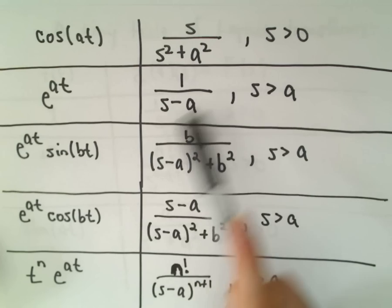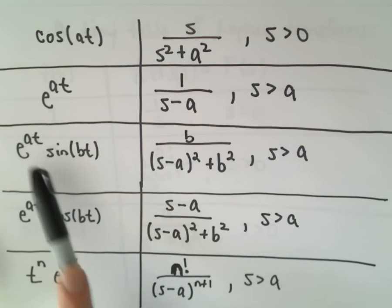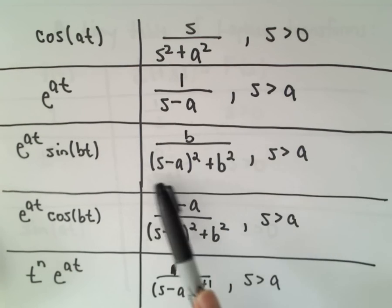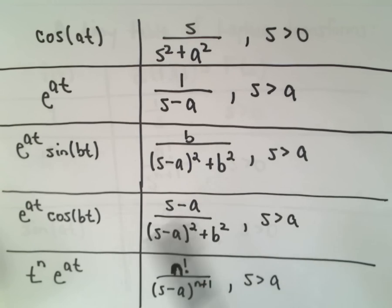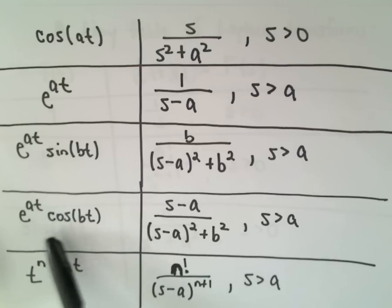If it's e to the a t, we get 1 over s minus a. e to the a t times sine of b t, we get b over s minus a squared plus b squared.